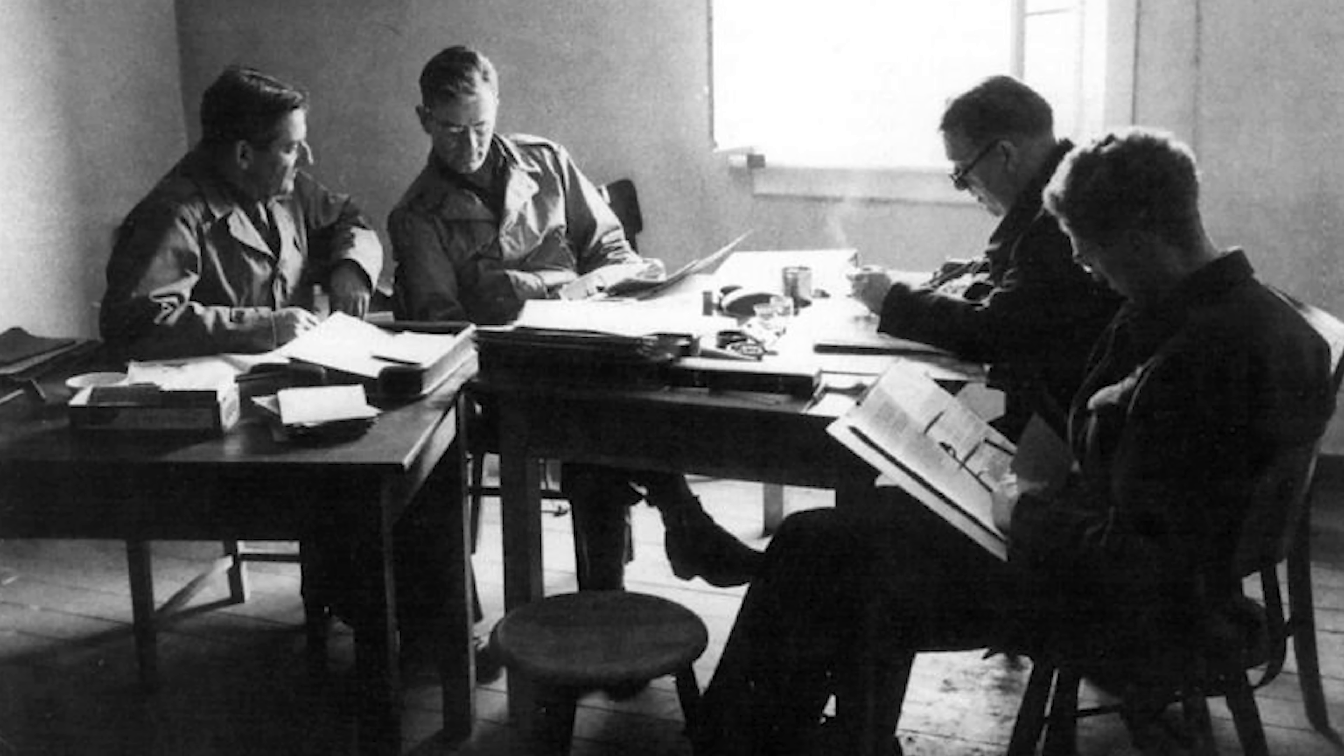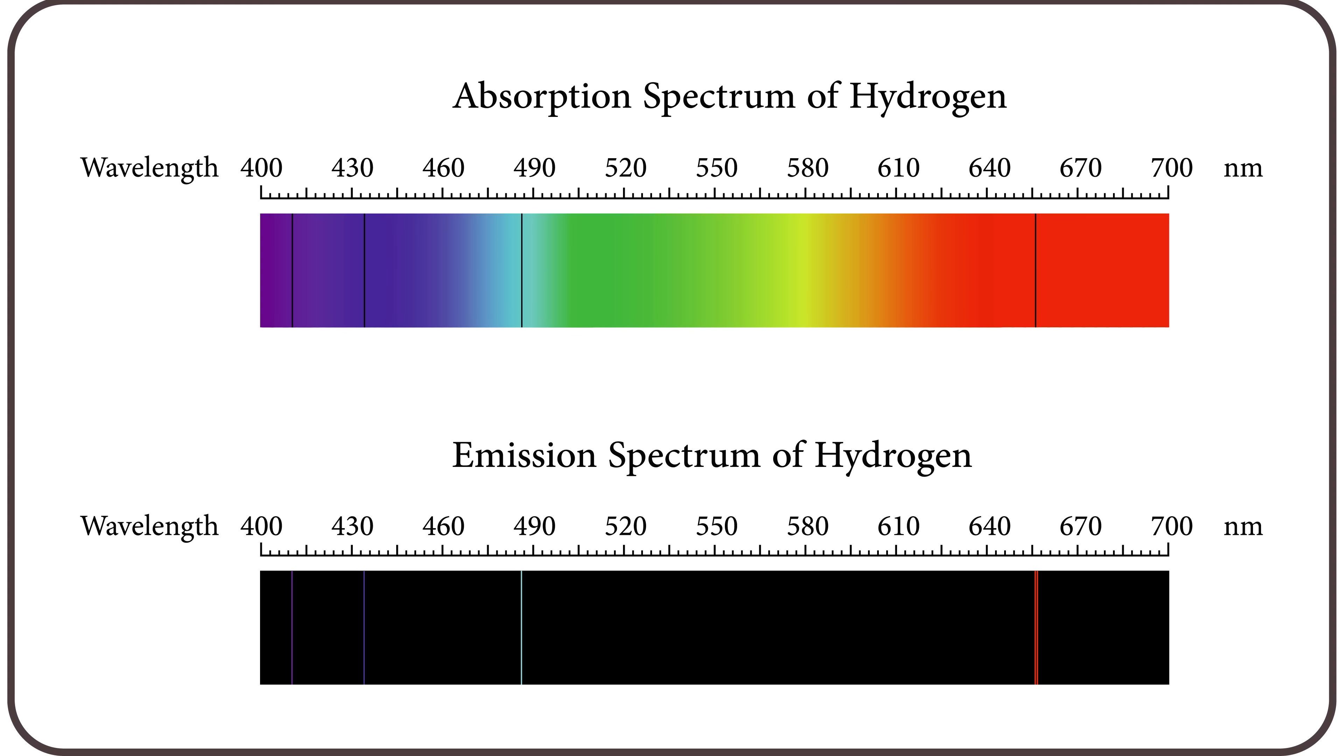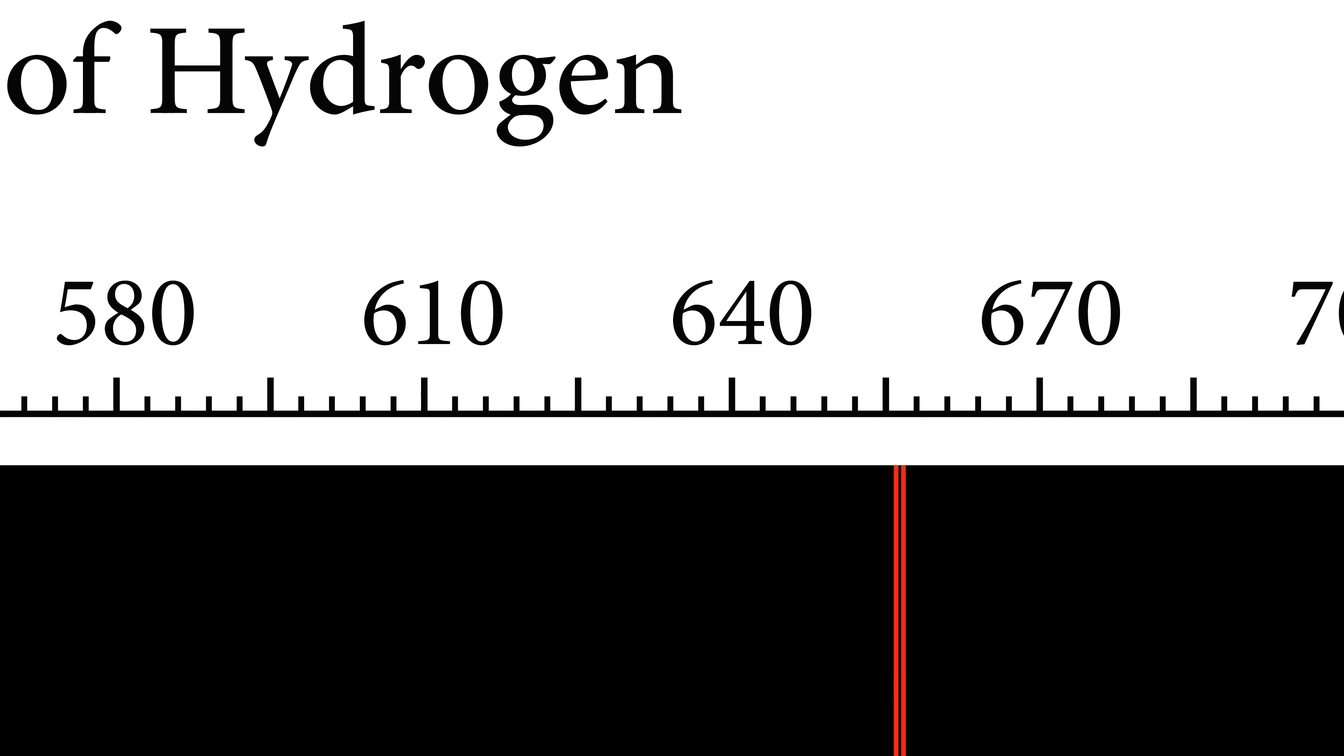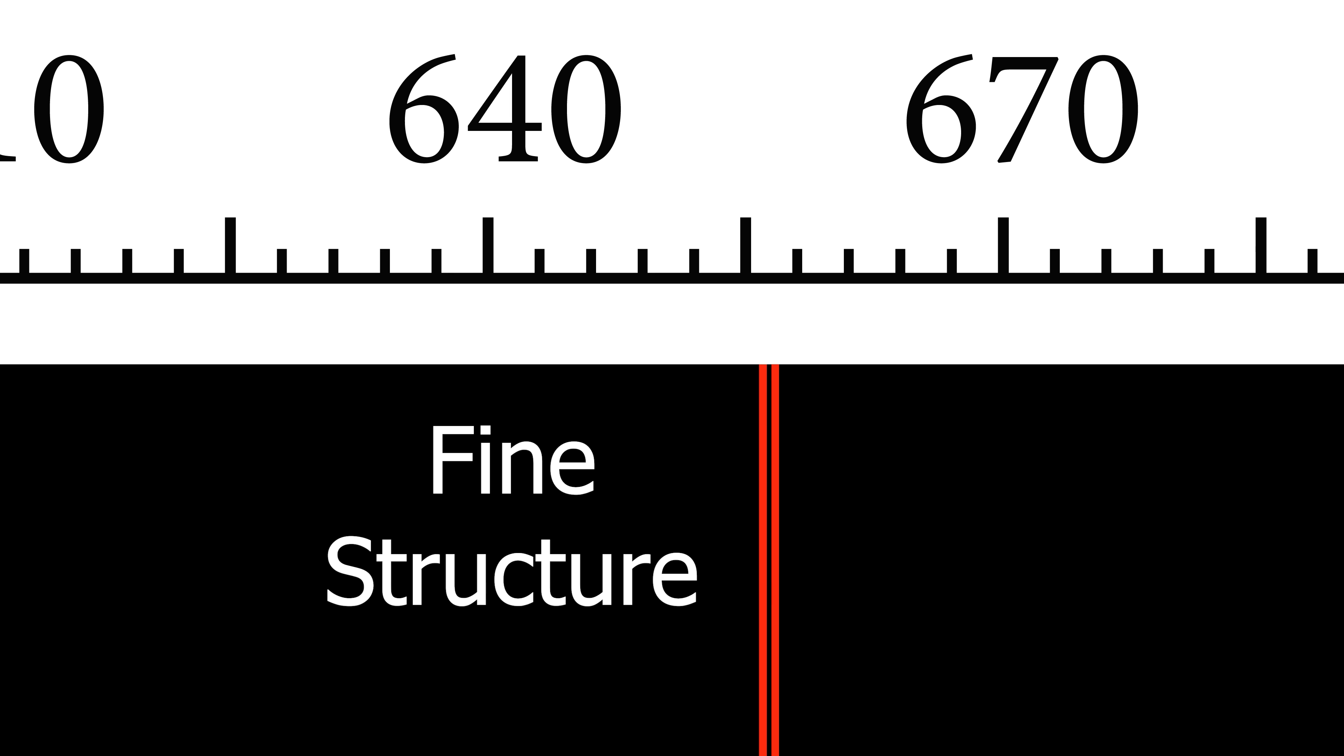In the 1920s, Samuel Goudsmit and George Uhlenbeck were trying to explain a puzzling phenomenon called fine structure spectral line splitting. When they zoomed in on the emission lines of certain elements, they saw that these lines were split into even finer lines.